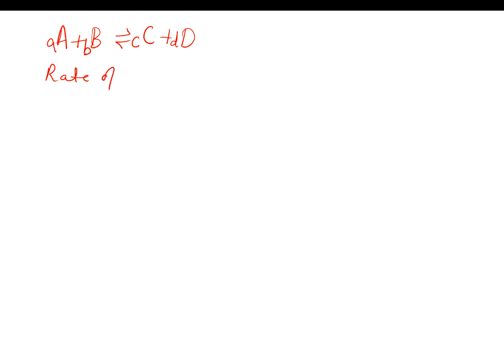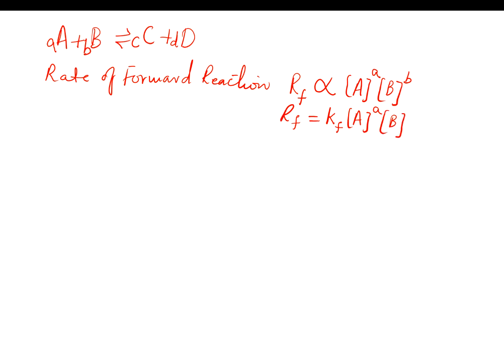What is the rate of forward reaction? According to the law of mass action, the rate of forward reaction will be directly proportional to the active masses of species A and B. Active masses means the concentration of A and B taking part in the reaction. When we remove this proportionality, we put an equals sign and a constant Kf for forward reaction with the same active masses A and B.